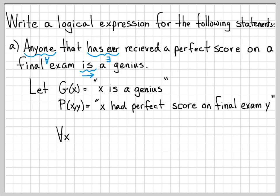So how can I do this? I'm going to write down for all X. And this is going to handle basically the anyone. So for all X, if there exists a Y, such that P of X comma Y. So this says, for all people, if there exists a Y that they had a perfect score on the exam, this implies that X is a genius.